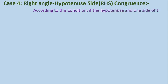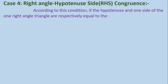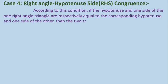According to this condition, if the hypotenuse and one side of the right angle triangle are respectively equal to the corresponding hypotenuse and one side of the other triangle, then the two triangles are congruent. Let's understand this concept by an example.